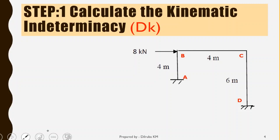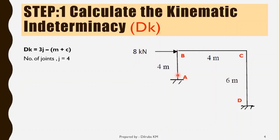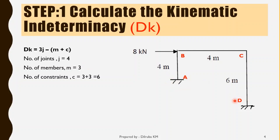We know how to calculate kinematic indeterminacy of a frame structure using the equation DK equals 3J minus M plus C. Here J is the number of joints — we have four joints A, B, C, and D, so J equals 4. M is the number of members — we have three members: AB, BC, and CD, so M equals 3. C is the number of constraints — at A and D we have fixed supports, so C equals 3 plus 3, which equals 6. Applying these values into the equation, DK equals 3J minus M plus C, and we get the answer as 3.